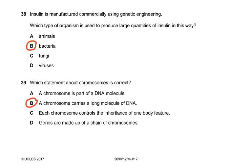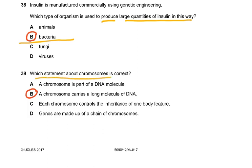Question 38: insulin is manufactured commercially using genetic engineering. Which type of organism is used to produce large quantities of insulin? The answer is bacteria — we genetically engineer them to produce insulin. They are easy to keep, don't require a lot of space, and people have no ethical issues with using bacteria.